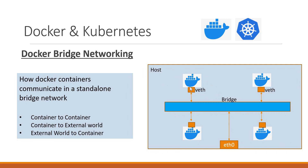When a container is created, a virtual Ethernet interface will be attached to the container, using which it will be connected to the bridge. All containers have different virtual Ethernet interfaces using which they are connected to the bridge network. In this video, we will see how container-to-container communication happens, how containers communicate with the external world, and how we can reach applications running inside containers from the external world.